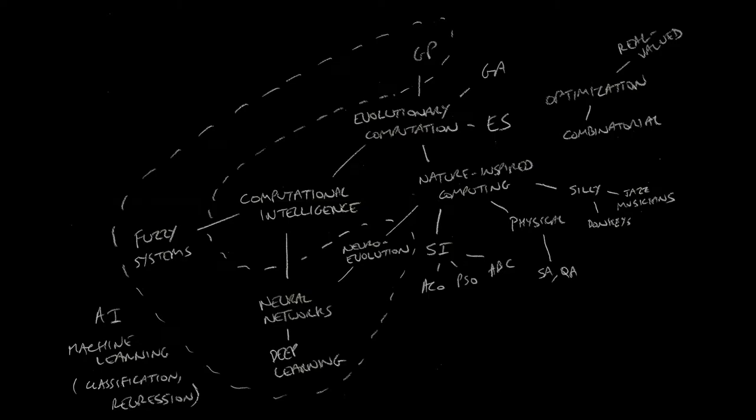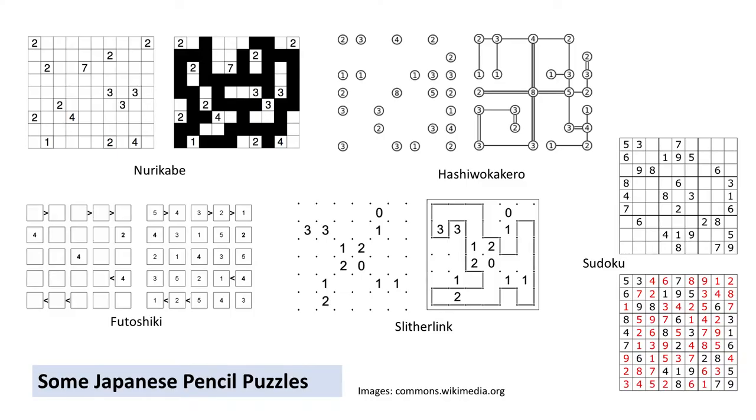So that's evolutionary computation and computational intelligence. So pencil puzzles, to lighten the mood a bit. These are some Japanese pencil puzzles. Apart from Sudoku, they're all down to one company called Nicoli. They used to publish a magazine called Nicoli Puzzle Communication, which is a really nice magazine if you can get it. All these puzzles are dreamt up by the readers. They'll send in ideas for puzzles, and then the setters will get the hang of them and start producing them.